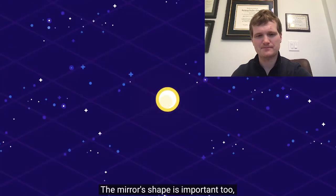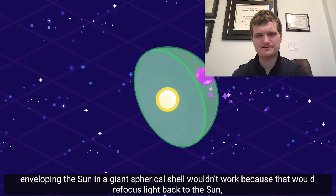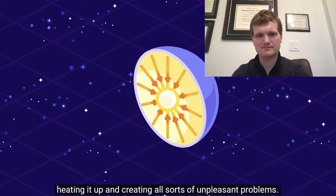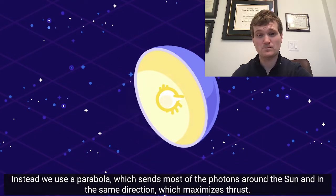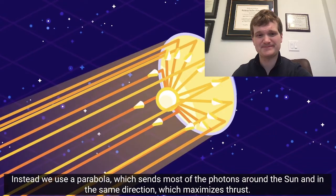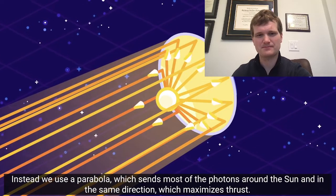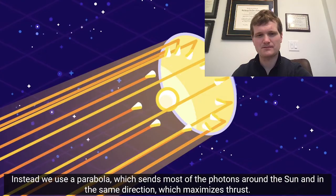The mirror's shape is important too. Enveloping the sun in a giant spherical shell wouldn't work because that would refocus light back to the sun, heating it up and creating all sorts of unpleasant problems. Instead, we use a parabola, which sends most of the photons around the sun and in the same direction, which maximizes thrust.